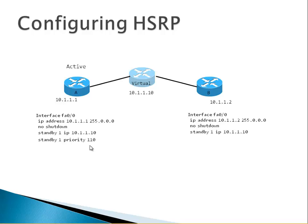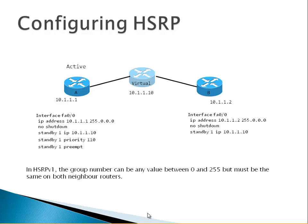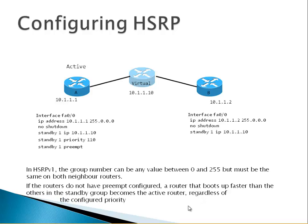Router A just became the active router because we left Router B at the default priority. With 'standby preempt': if an interface goes down, the active role moves to Router B. When Router A's interface comes back up, preempt enables that router to become active again. In HSRP version 1, group numbers can be any value between 0 and 255 but must be the same on both routers. If a router does not have preempt configured, a router that boots up faster than others in the standby group becomes the active router regardless of configured priority.